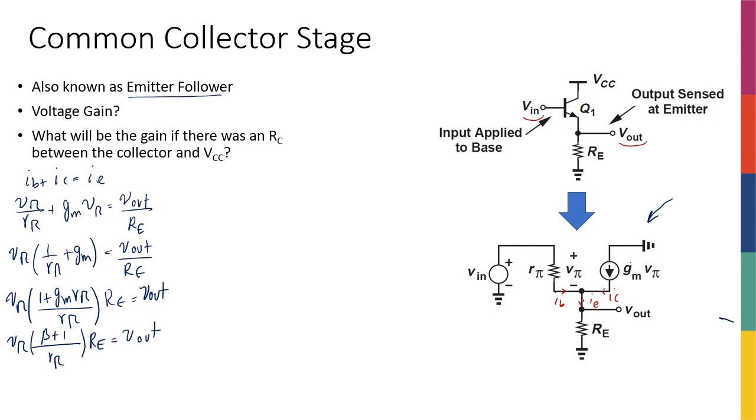Now what is Vπ? I can see that Vπ is really Vin minus Vout. Just writing KVL from here to here will tell me that. So basically plus Vin minus Vπ minus Vout is equal to 0, therefore Vin minus Vout is equal to Vπ.